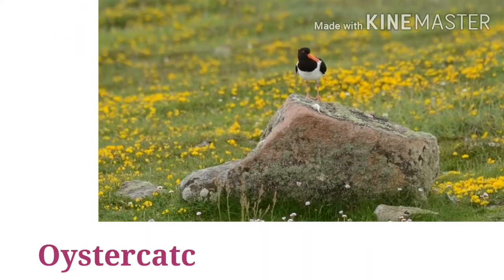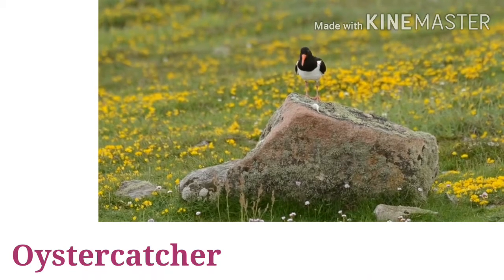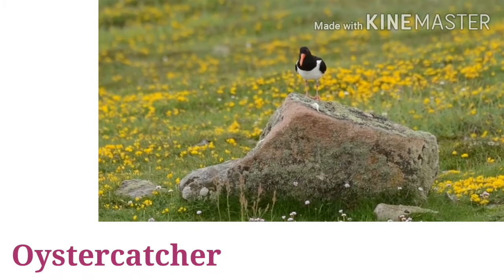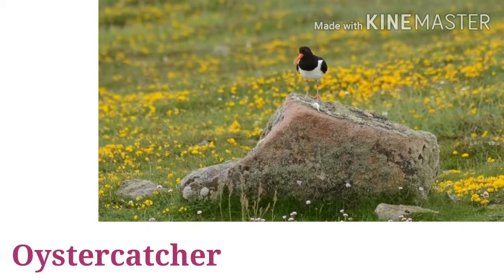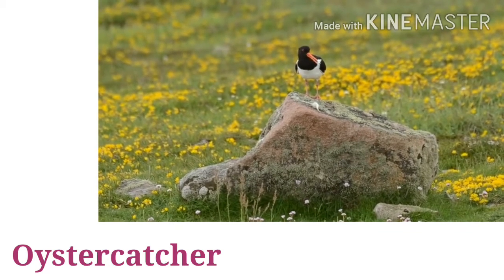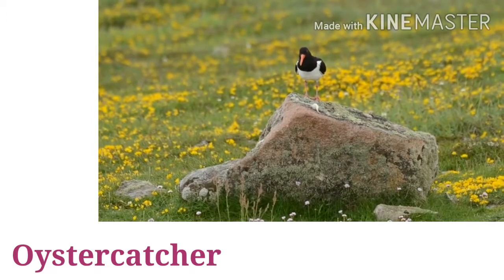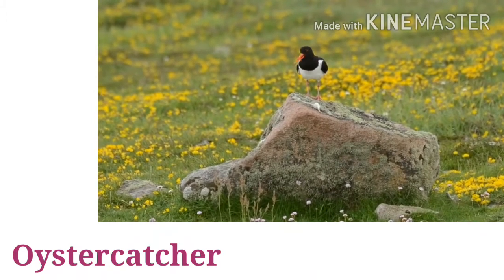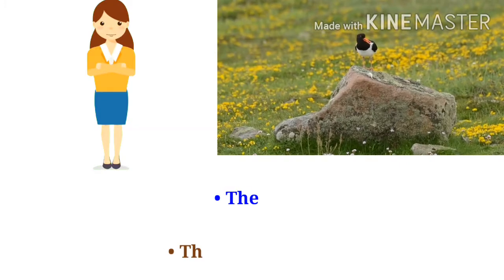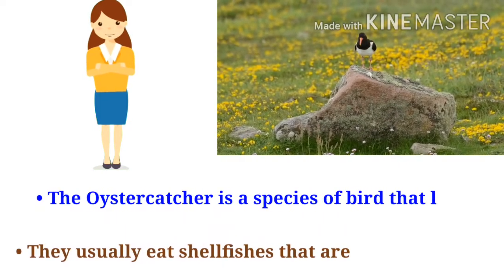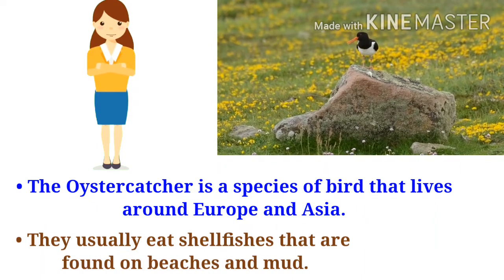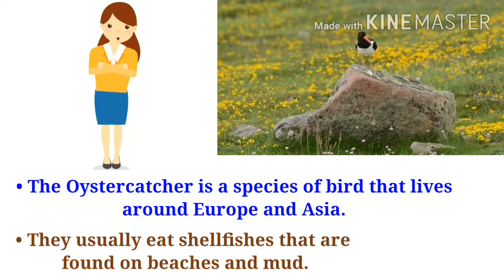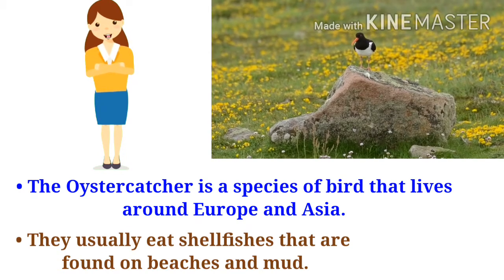Who is this? This is an oystercatcher. O-Y-S-T-E-R-C-A-T-C-H-E-R. Let's introduce the oystercatcher. The oystercatcher is a species of bird that lives around Europe and Asia. They usually eat shellfish that are found on beaches and mud.